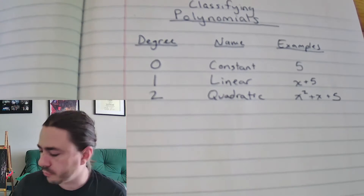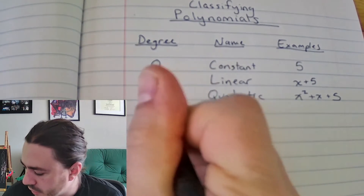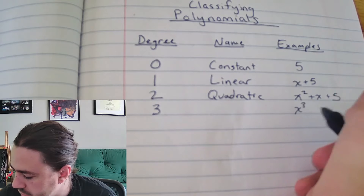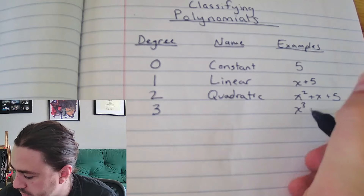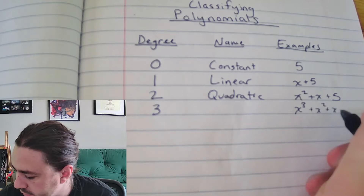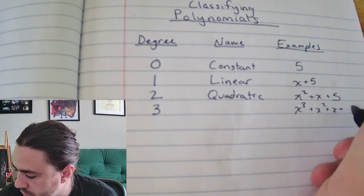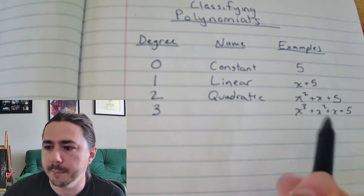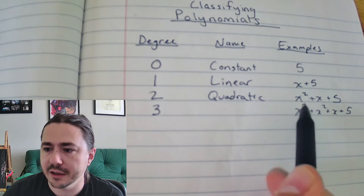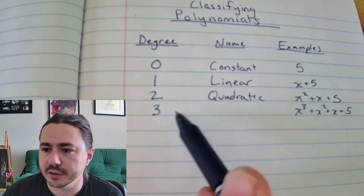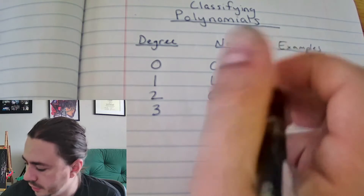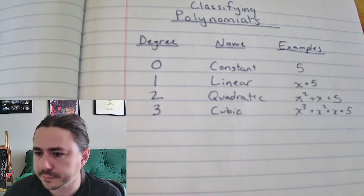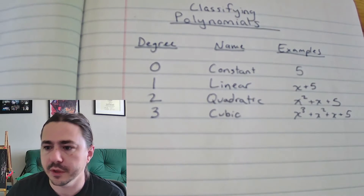Degree 3 is when the largest exponent is a 3, so you might have something like x cubed plus x squared plus x. It doesn't really matter what all the rest of the terms are — as long as that largest exponent is a 3, it's considered a cubic polynomial.